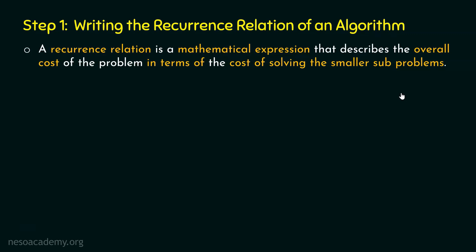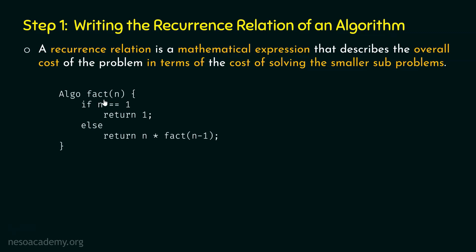Now let's learn how to write the recurrence relation for a simple algorithm. As an example, I am choosing the factorial algorithm. This is the algorithm we are quite familiar with. This algorithm is fact(n). We know this is the base case — if n is equal to 1, meaning we are solving the problem of fact(1), then we need to return 1. Otherwise, in the recursive case, we need to return n times fact(n-1). From fact(n), we are calling fact(n-1).